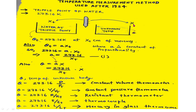Then the temperature of the unknown body, theta, can be given by the relation theta equals a times x, because temperature varies linearly with thermometric property, and here the thermometric property is the length of the mercury column. Substituting the value of constant 'a' from the earlier equation, theta equals 273.16 times (x / x_t), where x is the mercury length corresponding to the unknown temperature and x_t corresponds to the triple point temperature.